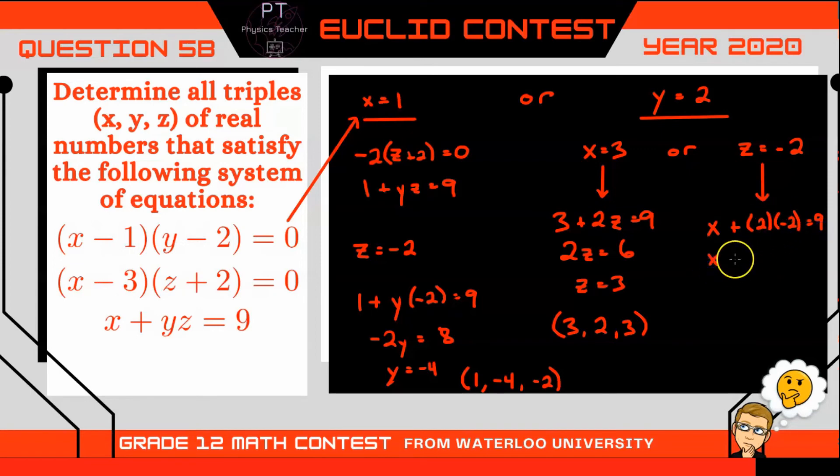That's x and then minus 4 is equal to 9. So if we add 4 to both sides of the equation we get x equal to 13. And there is our final (x, y, z) triple where x is 13, y is 2, and z is negative 2.